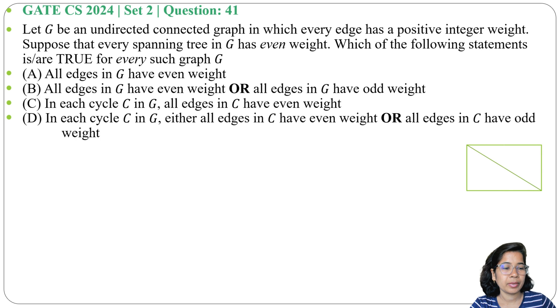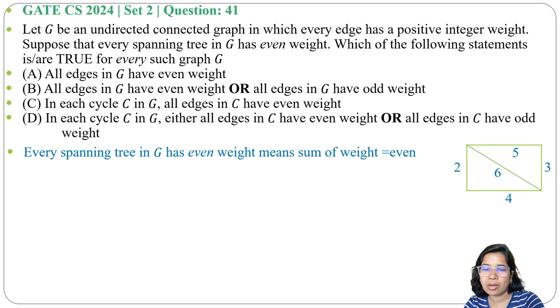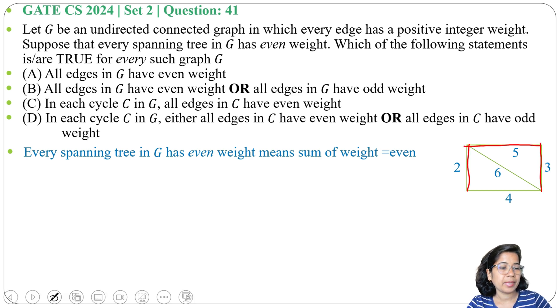Let's first create a random graph. Here all weights are positive and it's a mix of even and odd. Option A: all edges in G have even weight. Let's take a spanning tree like 5, 3, 2. So 5 plus 3 is 8, 8 plus 2 is 10. 10 is even, right? There is a mix of even and odd weight, so option A is wrong.